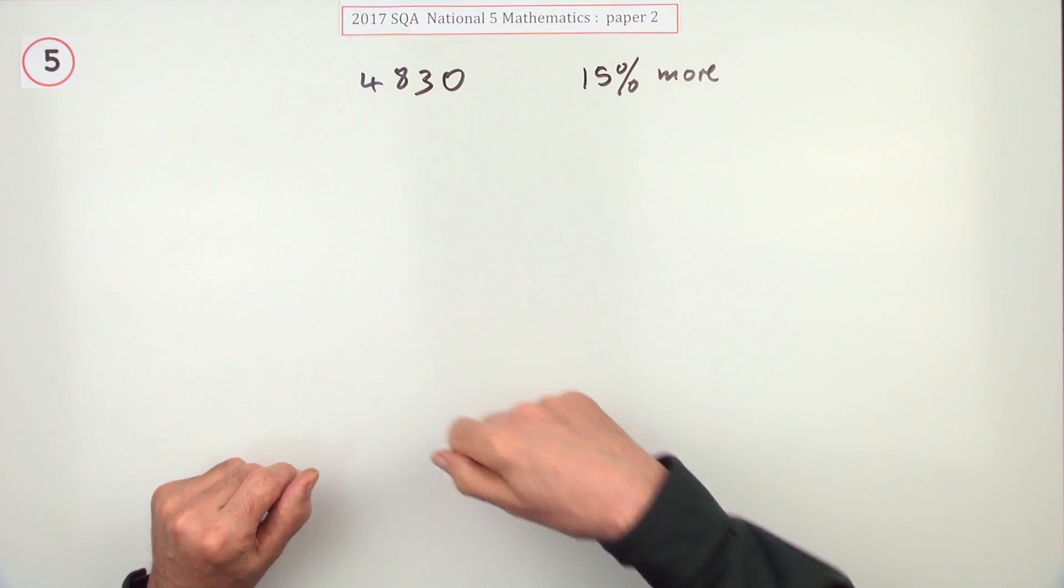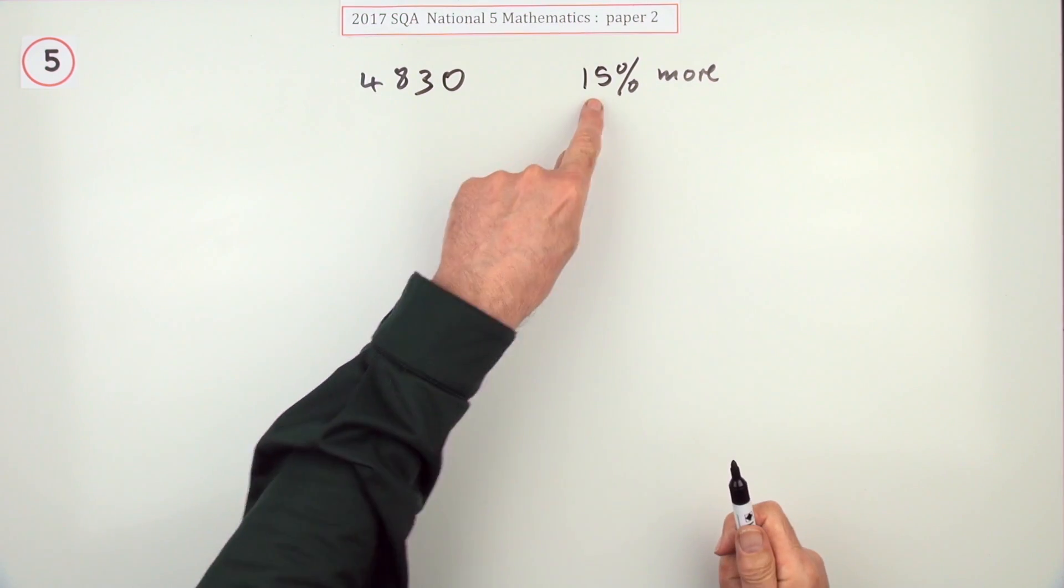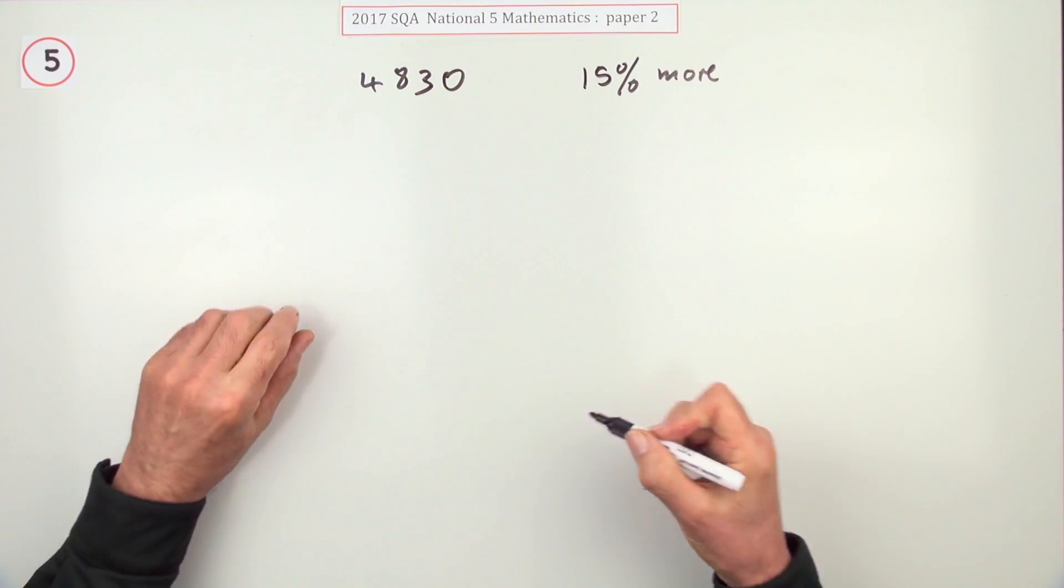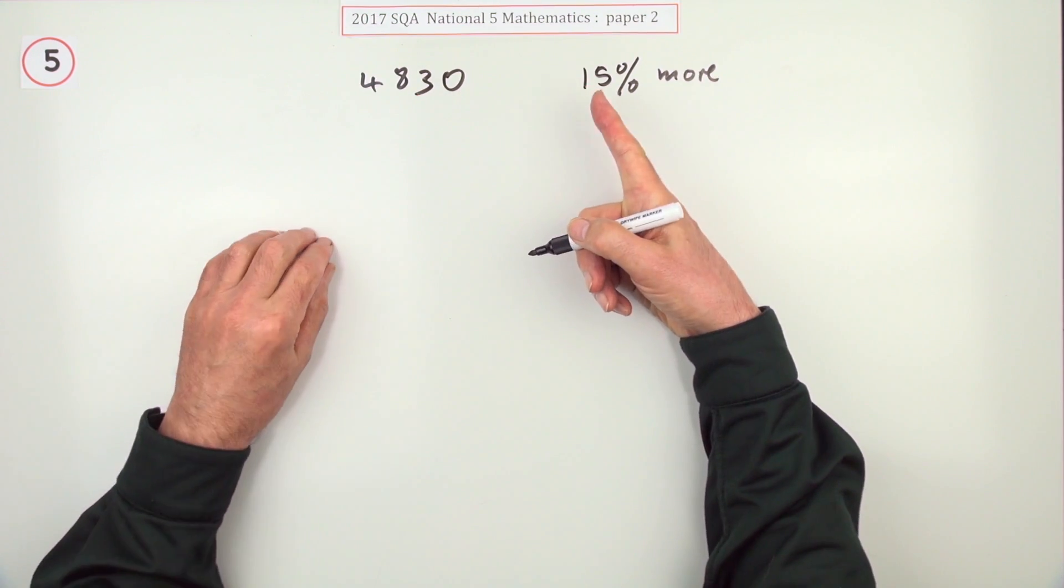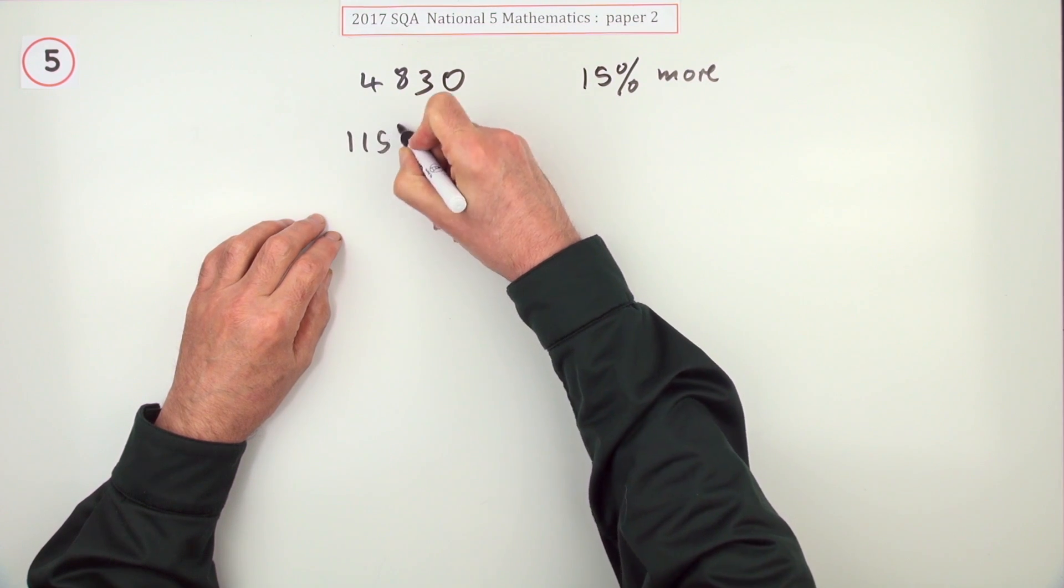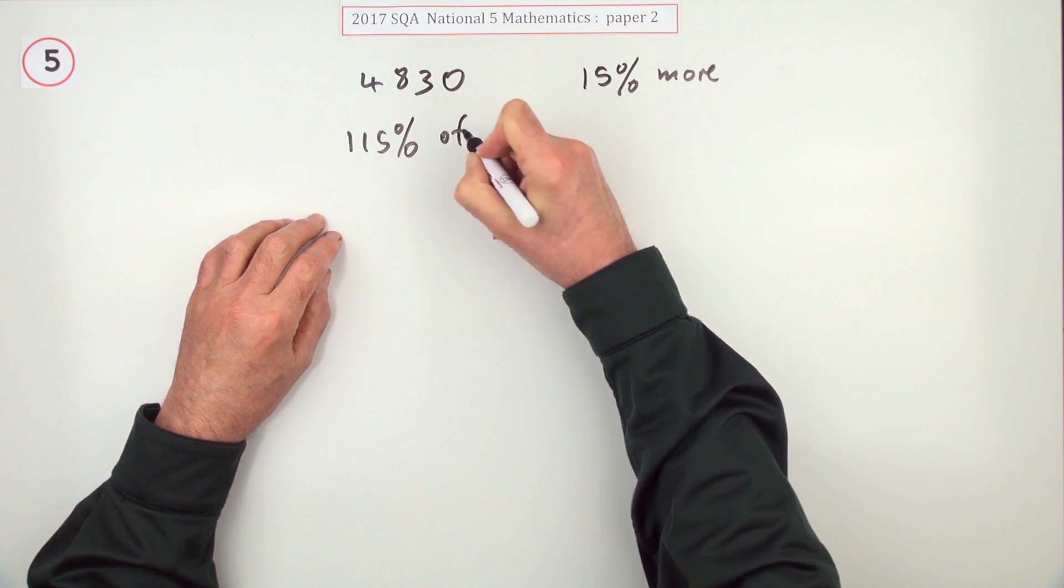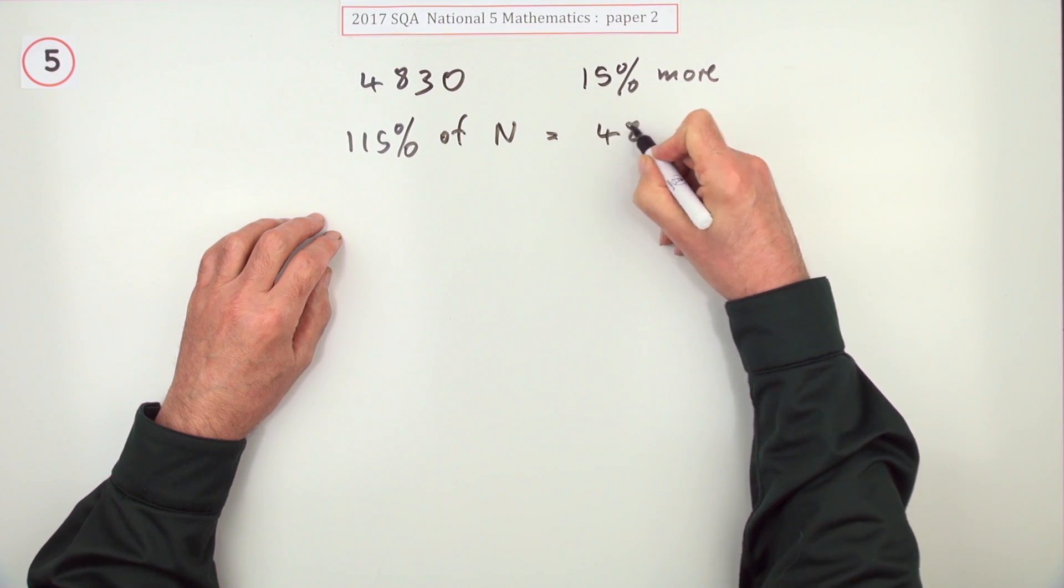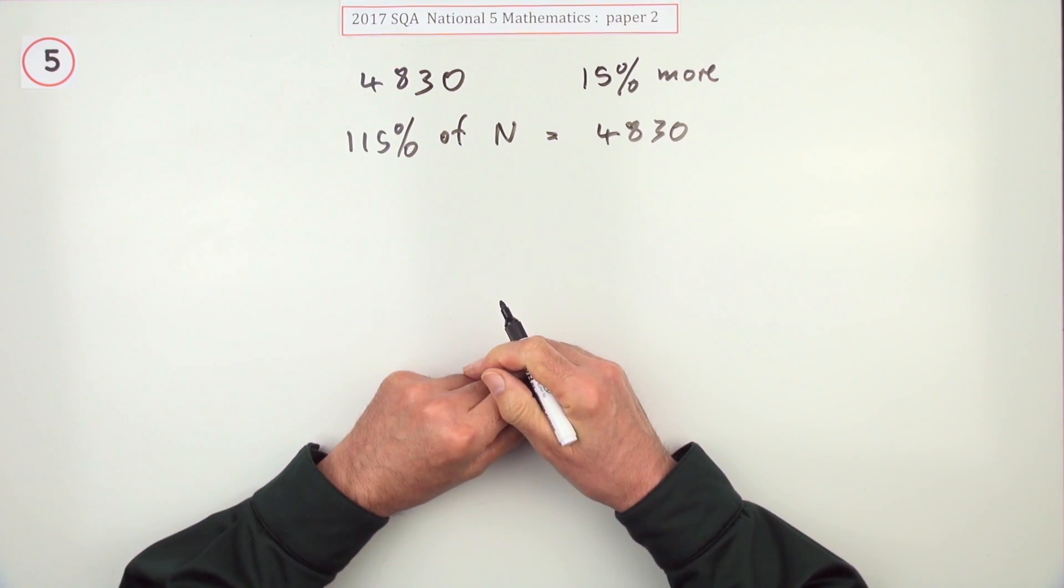You just write what it says. If it's 15% more, it means you've now got 115%. So 115% of whatever the number was is 4830. To get that number you can either divide by 115 to get 1%, then multiply by 100, or just divide by the decimal equivalent, divide by 1.15.